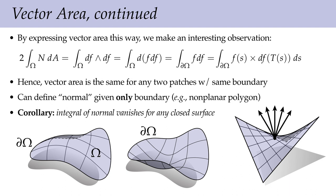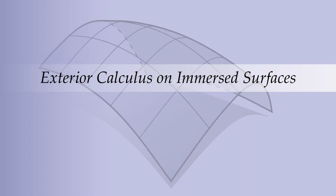Another immediate fact we get from studying the vector area: the integral of the normal vanishes for any closed surface. It doesn't have to be convex or embedded — as long as it's closed, meaning it has no boundary, the integral is zero. Why? Simply because we turned the integral of the normal over the surface into an integral over the boundary, and the integral over the empty set is zero. That's your proof that the average normal of any closed surface is zero — a nice fact.